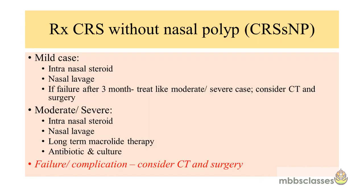For chronic rhinosinusitis without nasal polyp, mild cases are treated with intranasal steroids and nasal lavage; if failure after three months, treat like moderate to severe and consider CT PNS and surgery. For moderate to severe cases, treatment is intranasal steroids, nasal lavage, and long-term macrolide therapy, with empirical antibiotics modified as per culture report. Failure in these cases requires consideration of complications, CT scan, and surgical planning.